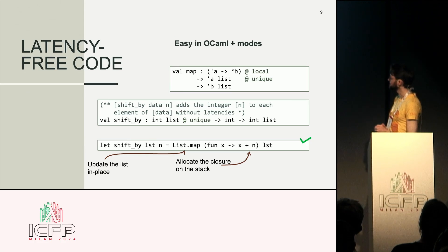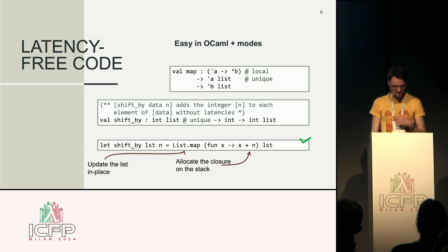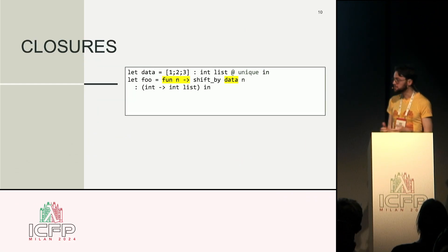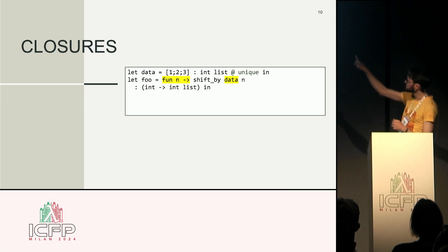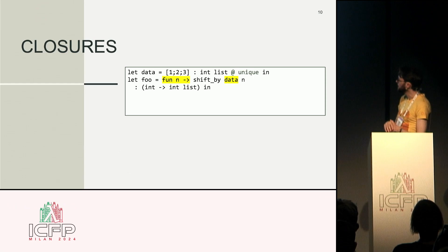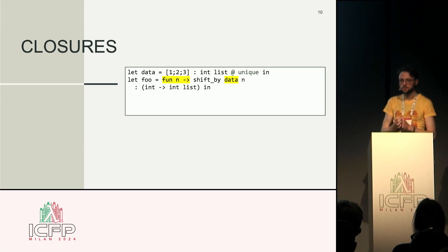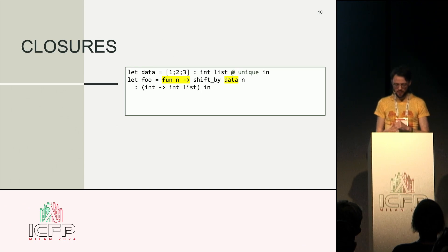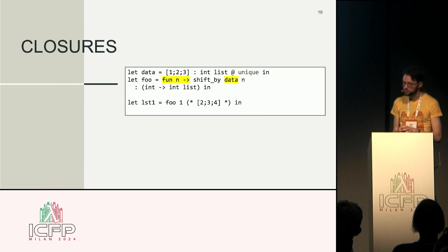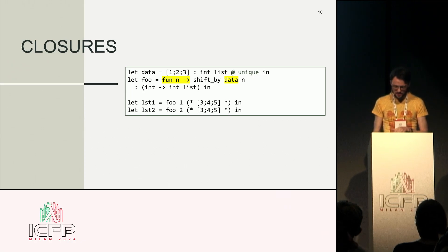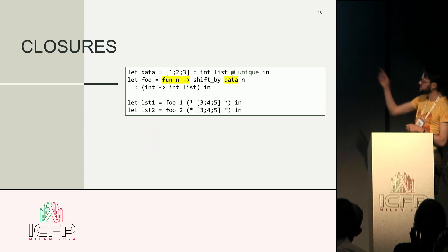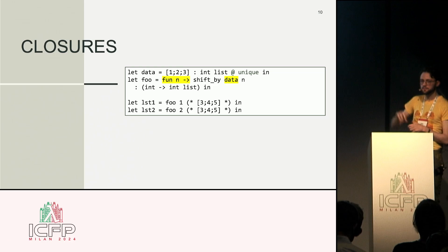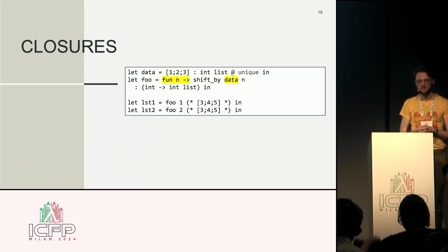This is very good, but there is a small problem that occurs as soon as you put unique data into a closure. Let's say I write a program with some data [1, 2, 3] which is a unique list, and I create a function foo that is a closure closing over the unique data. I can apply foo to one, shifting all elements by one to get [2, 3, 4]. But if I do this again, I see the second result is [3, 4, 5] — but also the first result is now [3, 4, 5] as well, because data is the same list and I'm overwriting it every time I invoke the closure. So clearly this is not feasible.